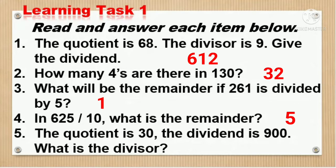And number 5 The quotient is 30, the dividend is 900. What is the divisor? 900 divided by 30 is 30. So the divisor is 30.